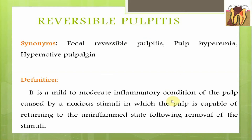Now we move on to the first entity: reversible pulpitis. As the name indicates, the inflammation of the pulp is reversible - meaning the pulp is capable of returning to a normal state if the noxious stimuli is removed. By definition, it is a mild to moderate inflammatory condition of the pulp caused by a noxious stimuli in which the pulp is capable of returning to the uninflamed state following removal of the stimuli.